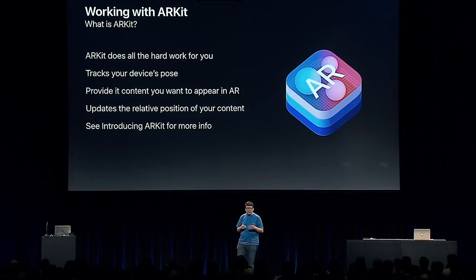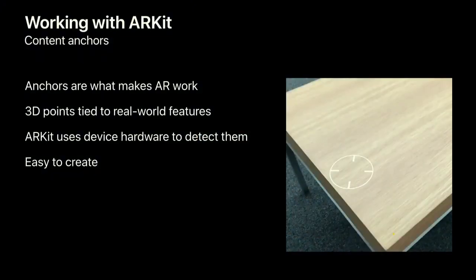If you'd like a deeper dive into exactly how all of this works, I highly recommend checking out the Introducing ARKit session that happened earlier this week. ARKit is able to track and update the position of your content through the use of anchors. Anchors are 3D points that correspond to real-world features that ARKit detects through scene understanding, which uses your device's camera to perceive and process the world around you. You can request ARKit to detect an anchor at any time through the API, or create one manually using your device's position and orientation.